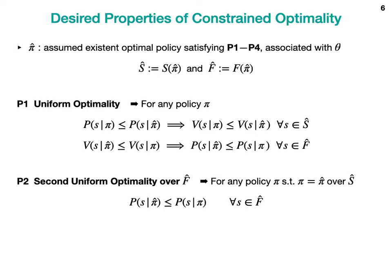We may have multiple optimal policies that all satisfy P1 but achieve different Pareto efficiency. The second property, second uniform optimality over F-hat, limits such optimality to cases where safety is maximally improved over the unsafe region. This property makes sense in practice since we trade off safety and performance within the safe region, but not in the unsafe region, in which safety becomes the first priority to be optimized.